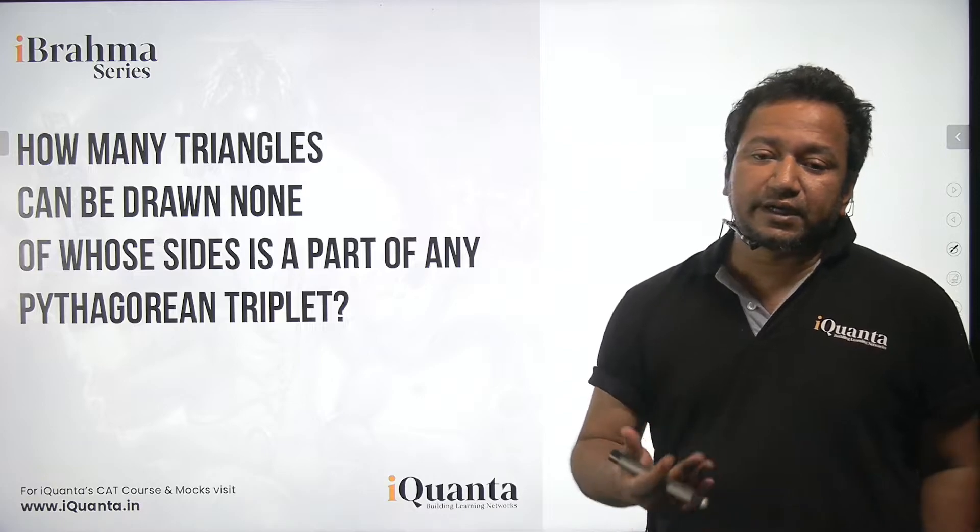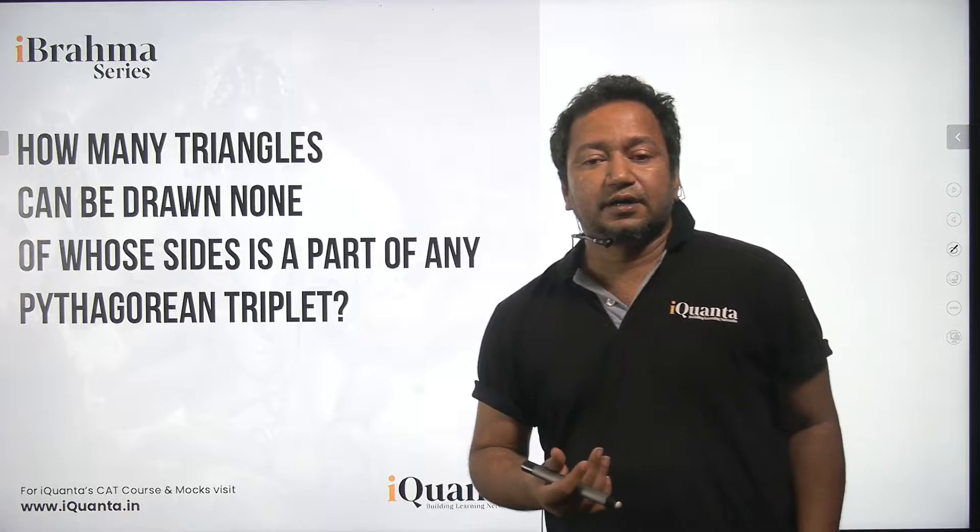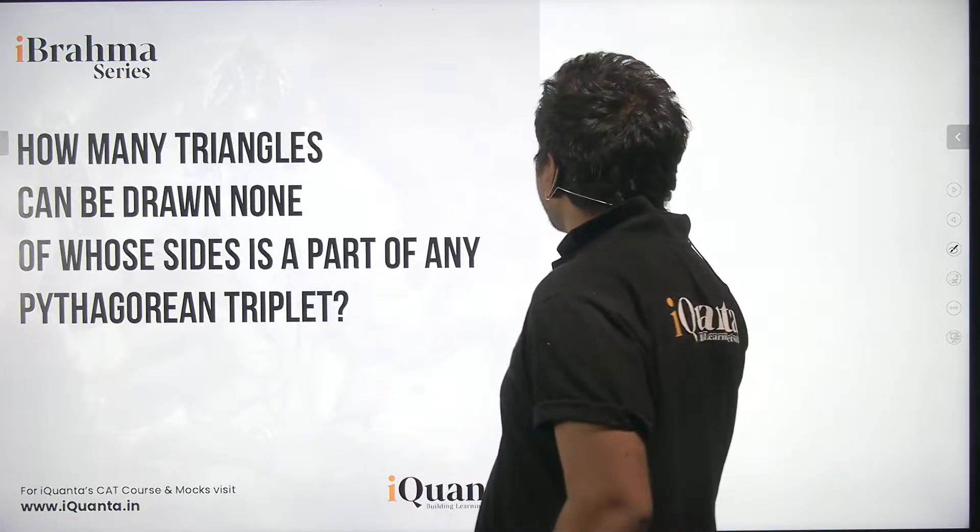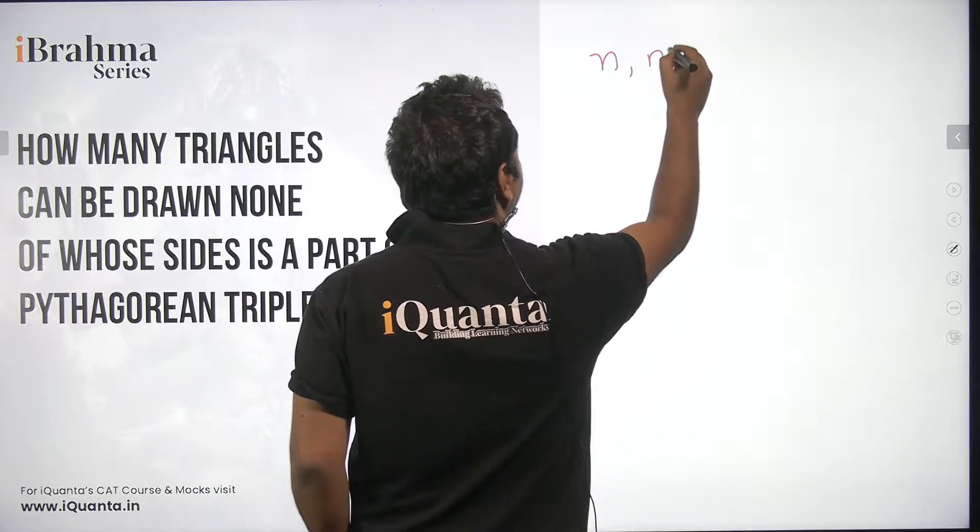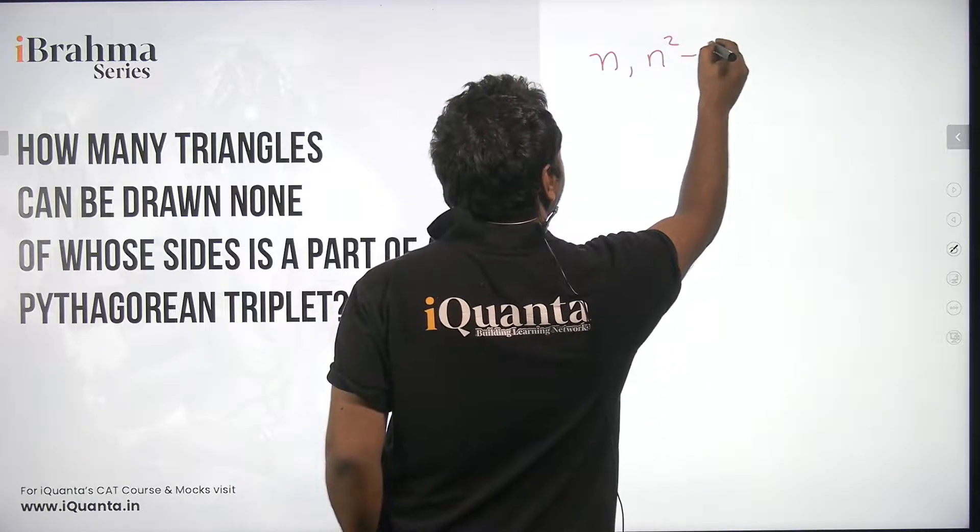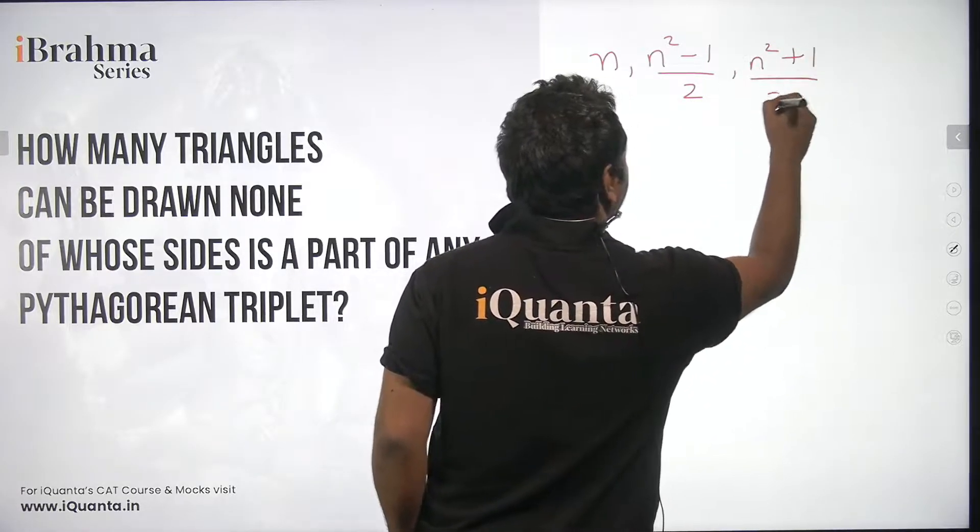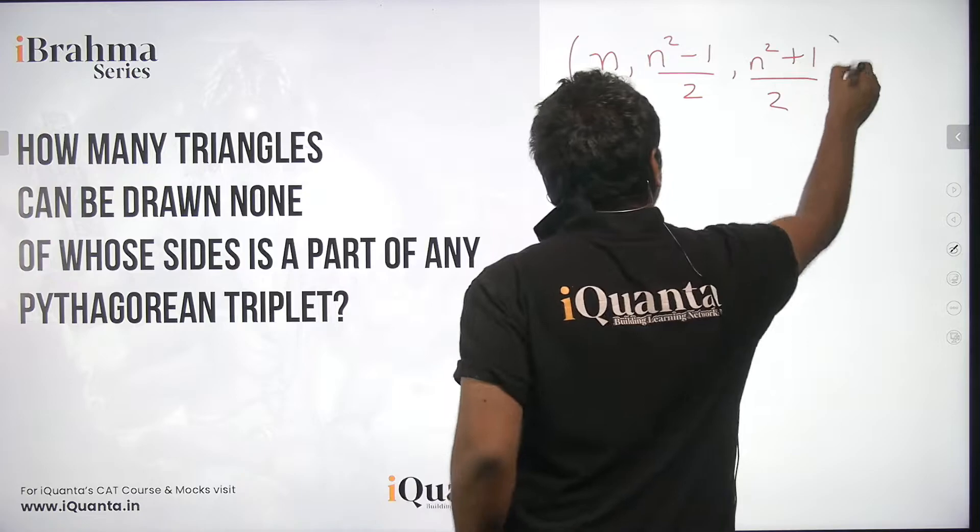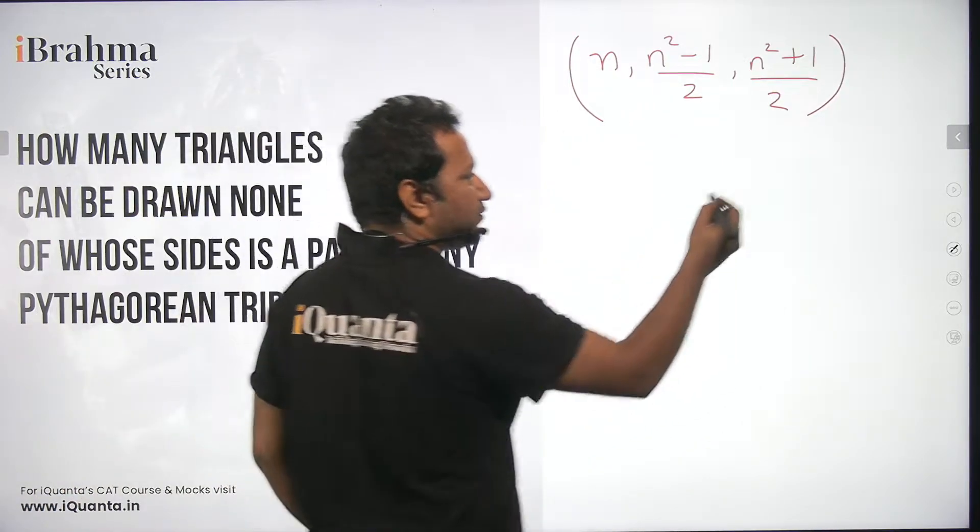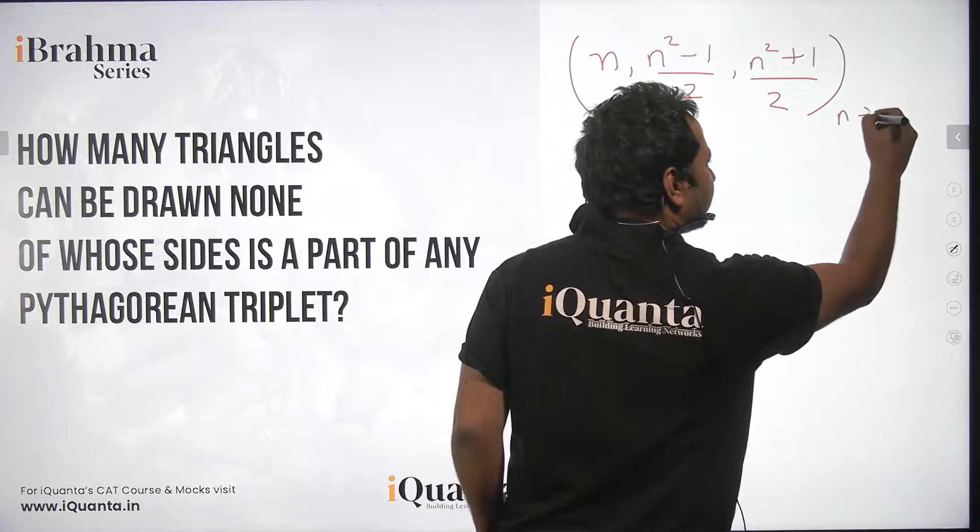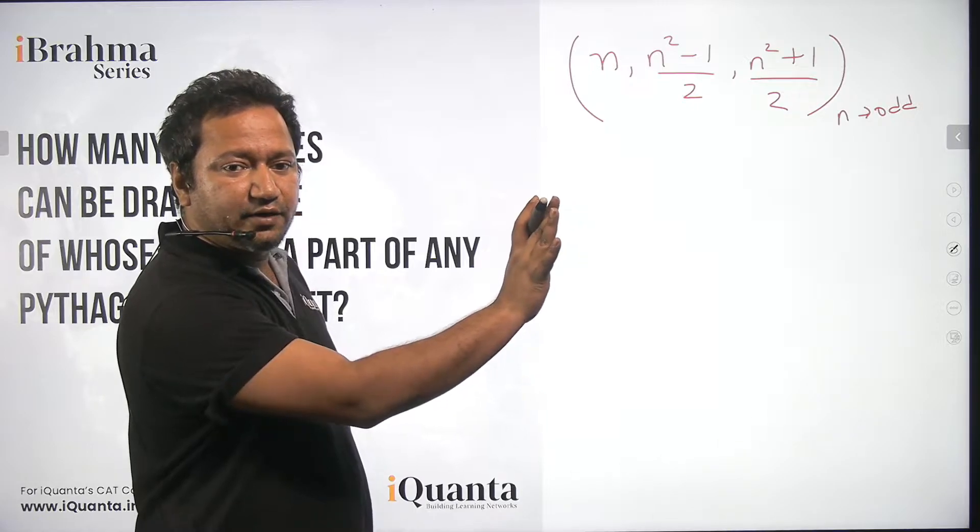In the class where I discussed about Pythagorean triplets by giving you formula for Brahma triplets, the formula was like this. So this set would be a Pythagorean triplet if n is odd. That is what we learned in the last class. So this will be a Pythagorean triplet.